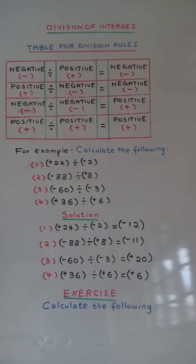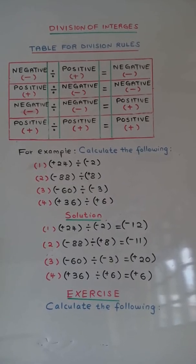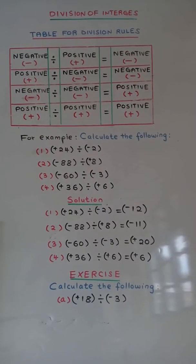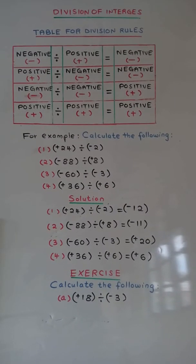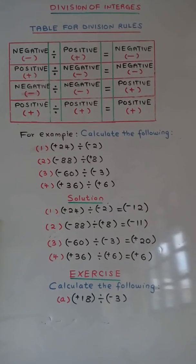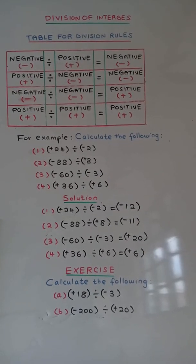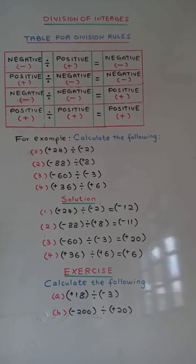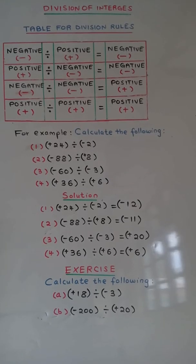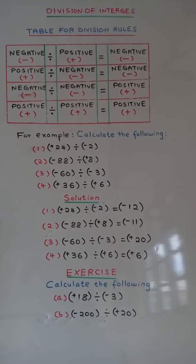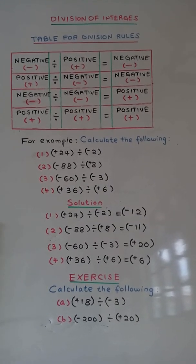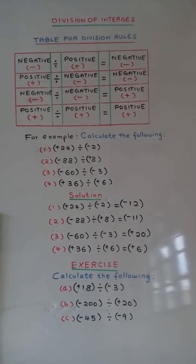Calculate the following. A: positive 18 divided by negative 3. B: negative 200 divided by positive 20.